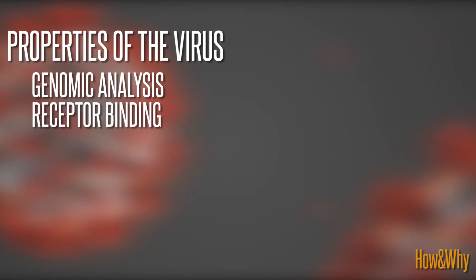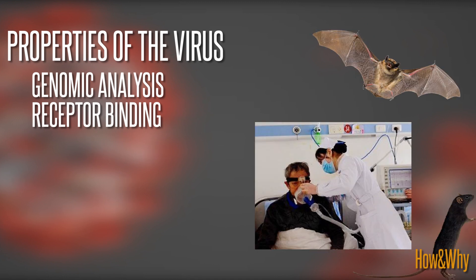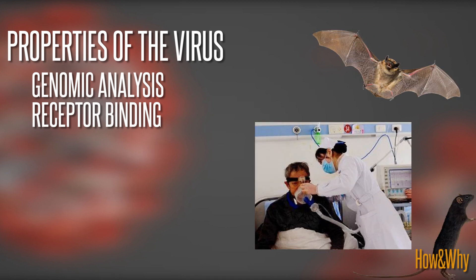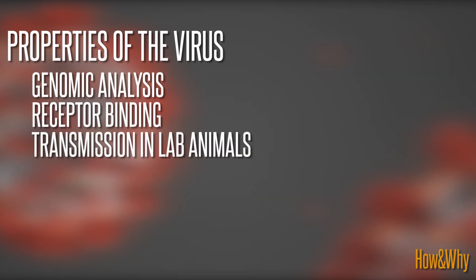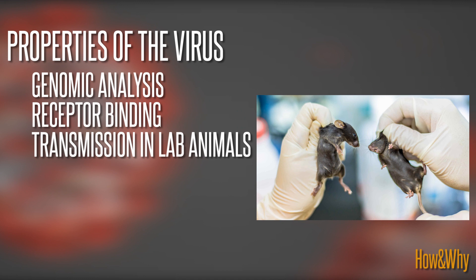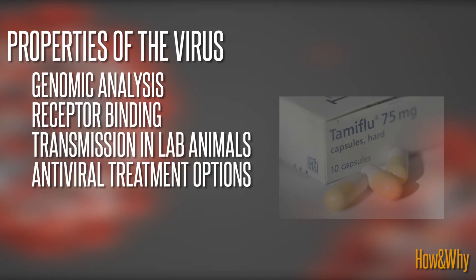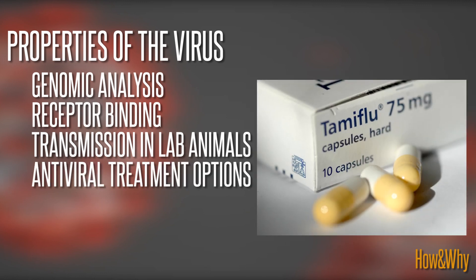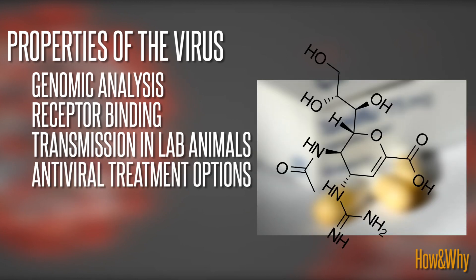Receptor binding refers to the host preference of a virus — animals or humans — as well as the types of tissues and cells the virus is best suited to infecting. Transmission in lab animals is a measure of the virus's ability to efficiently transmit in animals in laboratory studies. Antiviral treatment options refer to the predicted effectiveness of antiviral medications.